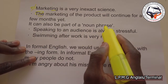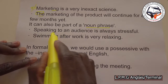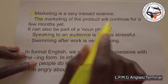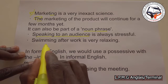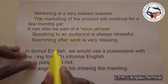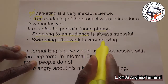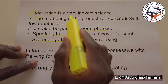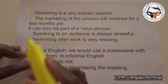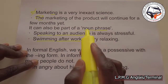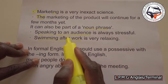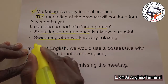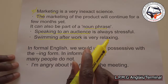The ING form can also be part of a noun phrase. 'Speaking to an audience is always stressful' — all of that is a noun phrase. Or: 'Swimming after work is very relaxing' — swimming after work is a noun phrase. So we can use an article, or we can make it part of a noun phrase by adding more words.